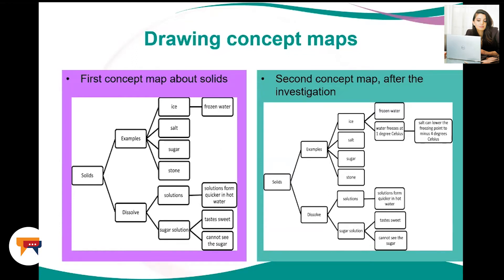Your second concept map appears after the investigation. At the beginning and end of teaching a team-based science theme, teachers want to know what learners know about the concepts. It's very important to understand what they already know, and at the end, you want to know how much the learners learned. You can reflect on your own teaching — how your lesson incorporated new ideas and how much the ideas about the concepts changed. Learners can draw these concept maps in their science journals to show how much they have learned.